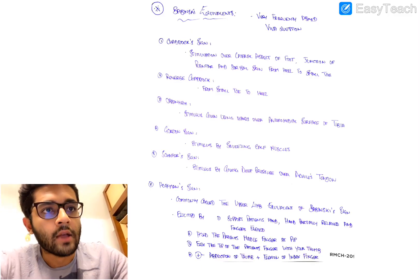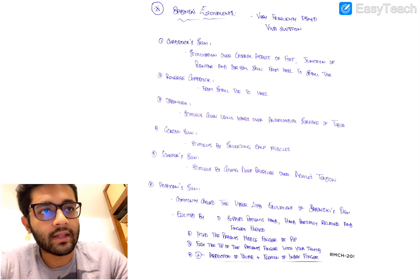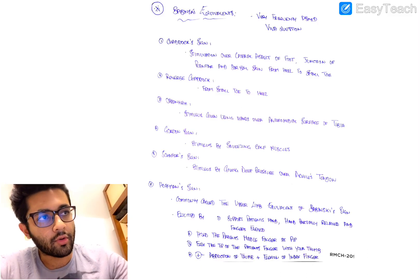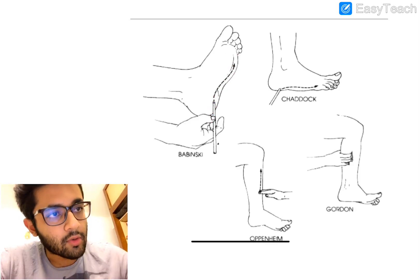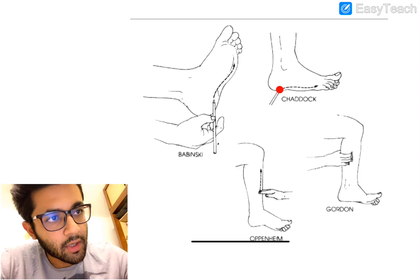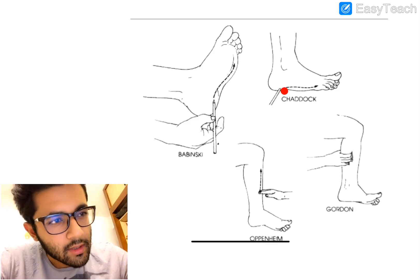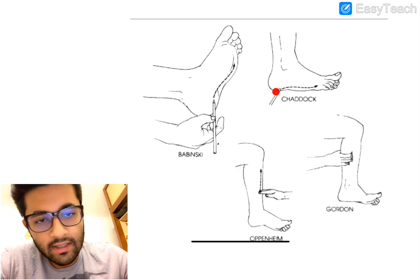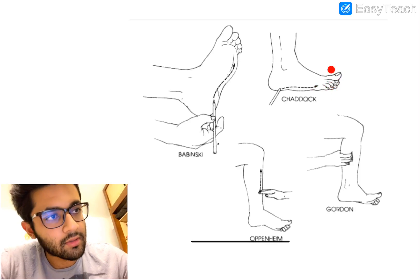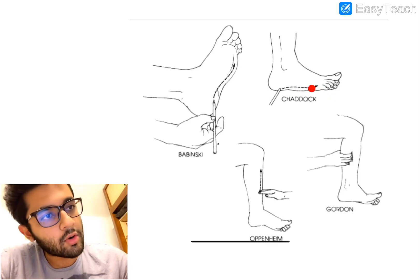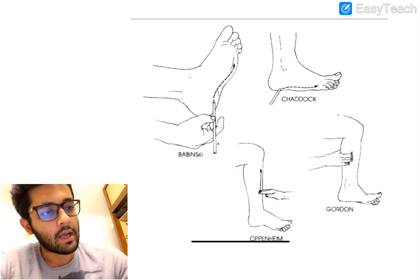First, the Chaddock sign and reverse Chaddock sign. In the Babinski we stimulate the plantar aspect of the foot, but in the Chaddock sign the stimulus is given on the lateral aspect of the foot — at the zone where plantar skin and dorsal skin meet. Start just below the lateral malleolus and move to the base of the small toe, and you see a positive Babinski response in a positive individual. The reverse Chaddock sign is the same but done in the opposite direction: start from the small toe and go towards the lateral malleolus.